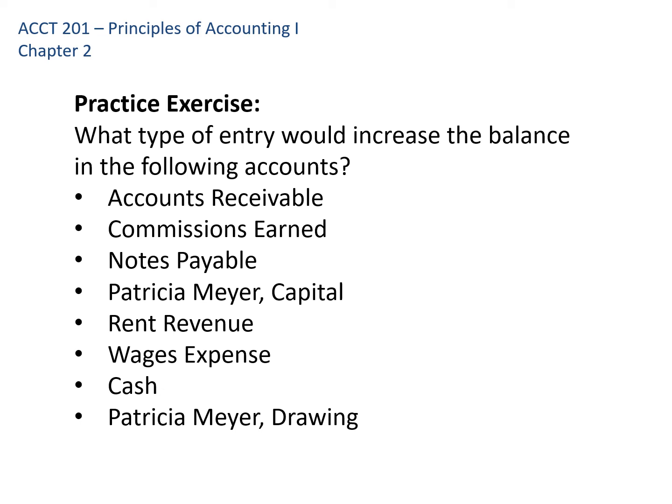Here's a practice exercise. Accounts receivable is an asset — the right to receive future payments from customers — and since assets increase on the debit side, we record an increase in accounts receivable with a debit. Commissions earned is a type of revenue, and revenue increases with a credit, so we credit that account. Notes payable is a liability; liabilities increase on the credit side, so an increase in notes payable is recorded with a credit. Patricia Meyer Capital is part of owner's equity, which increases with a credit.